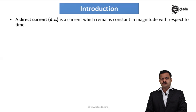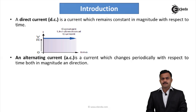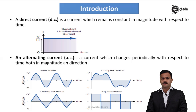Direct current is a current which remains constant in magnitude with respect to time. If I plot the graph, I will get a straight line which is independent of time — a fixed magnitude. Whereas AC supply is a current which is changing periodically with respect to time, both in magnitude and direction. If we plot this, we get waveforms — one sinusoidal, another triangular. Not necessarily all the time should it follow a defined manner.